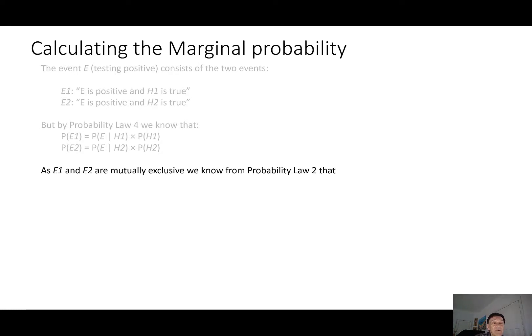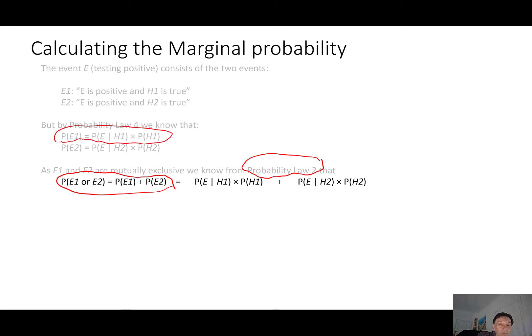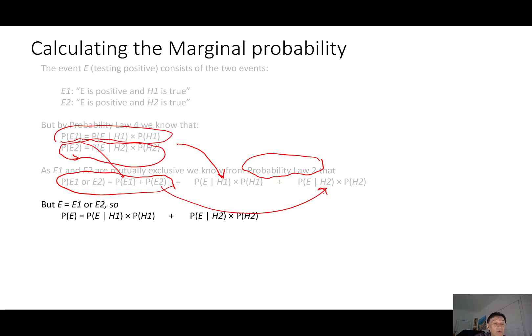Now, E1 and E2 are mutually exclusive. So we know from probability law two that the probability of E1 or E2 is just the probability of E1 plus E2. But we also know that E is equal to E1 or E2. So because those are equal, we can conclude that the probability of E is that formula there.